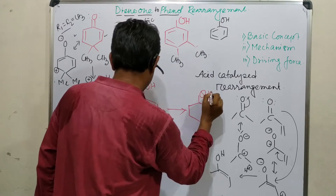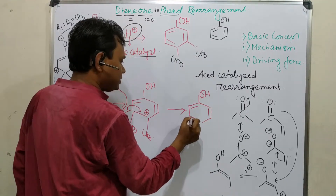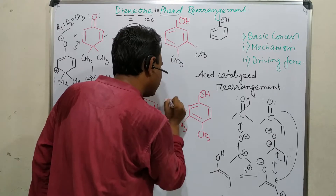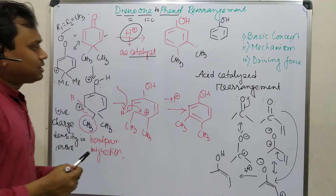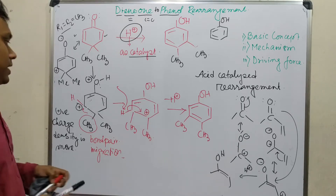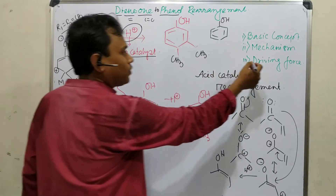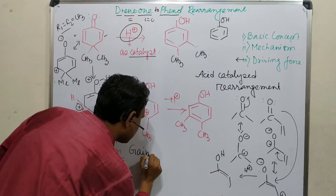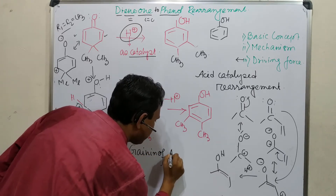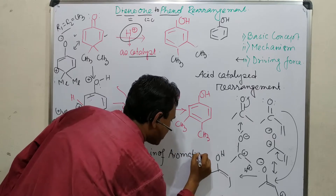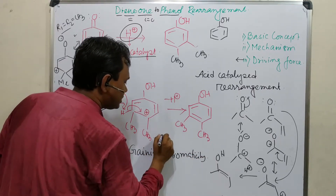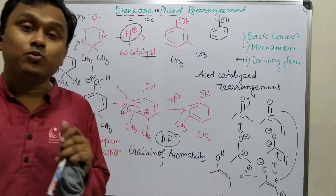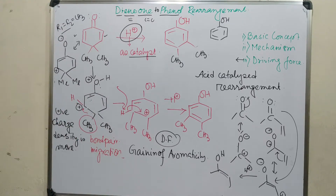So this gives the OH group here — and by elimination of a proton, the phenol derivative is formed. The driving force for this reaction is the gaining of aromaticity. We know that aromaticity means stabilization, and gaining aromaticity means a huge amount of stabilization — so that is the driving force for this reaction.